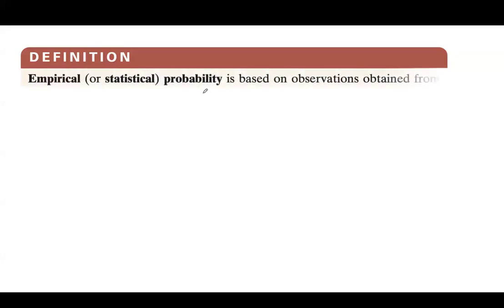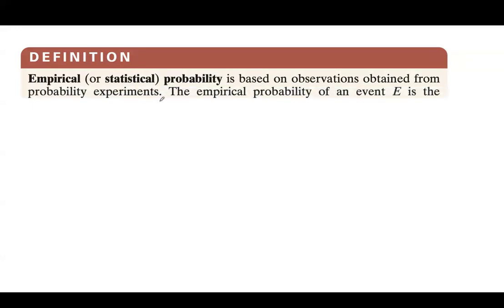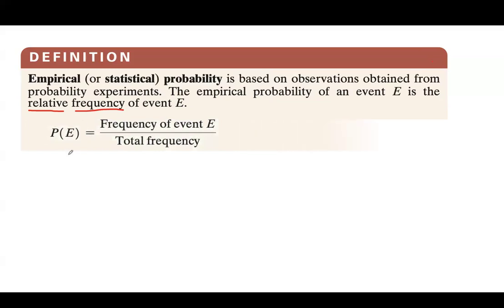We talked about classical probability. We have another type called empirical probability. It is based on observations obtained from probability experiments that have repetition, meaning you have frequency for those events. You use relative frequency to calculate the probability. The probability of event E is a fraction: the frequency of that event on the numerator, divided by the sum of all frequencies on the denominator — denoted as f over n.